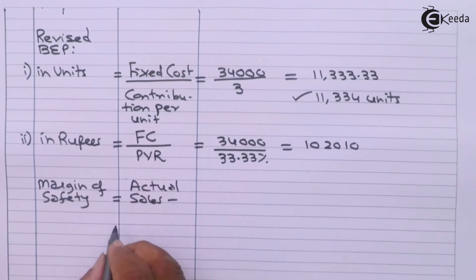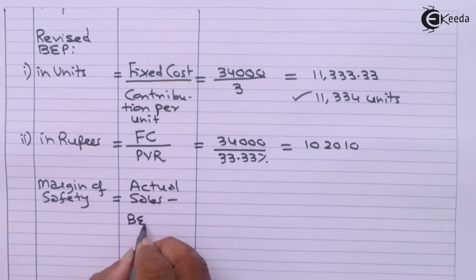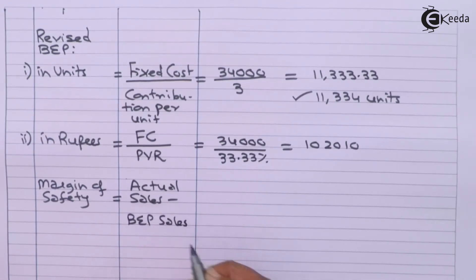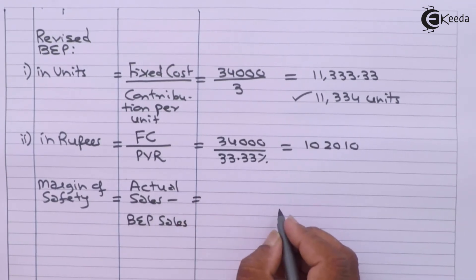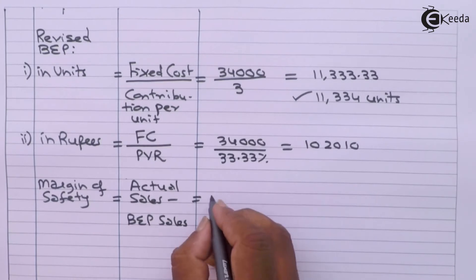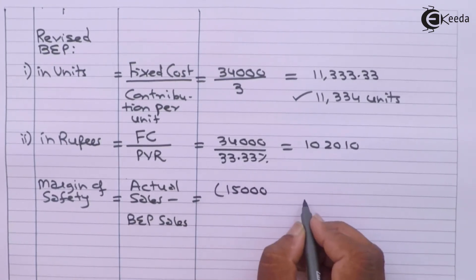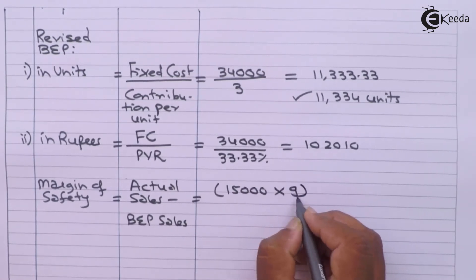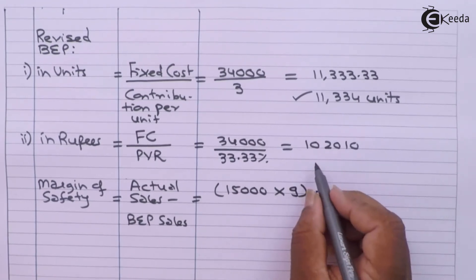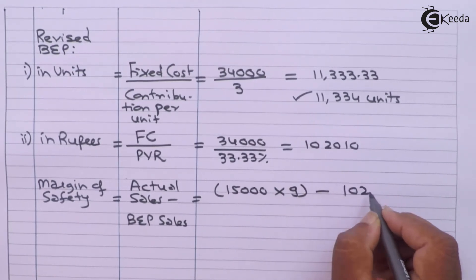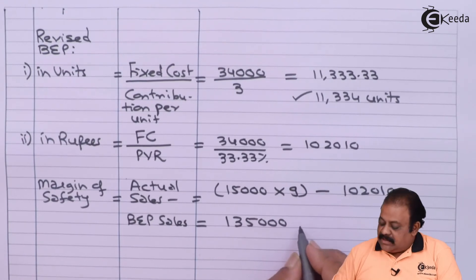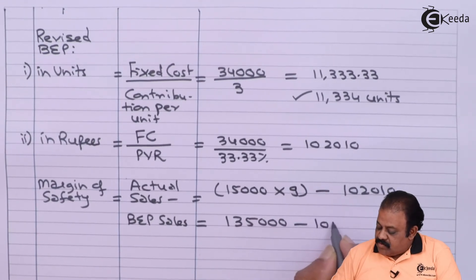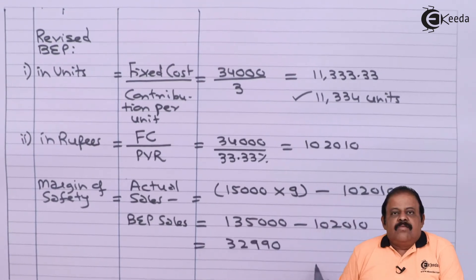Finally, we calculate the revised margin of safety. The formula is actual sales minus break-even point sales. Actual sales are based on the current year: 15,000 units sold at the revised rate of ₹9, giving actual sales of ₹1,35,000. Break-even point sales is ₹1,02,010, so margin of safety is ₹1,35,000 minus ₹1,02,010 = ₹32,990.